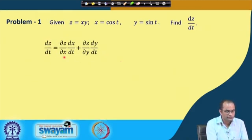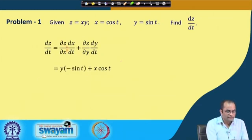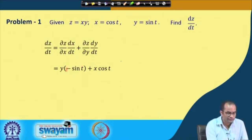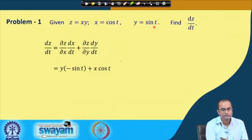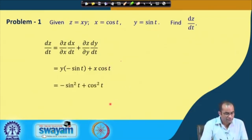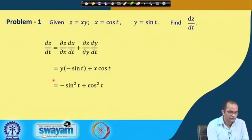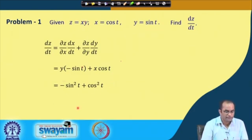Applying the formula: ∂z/∂x = y (since z = xy), and dx/dt = −sin t (derivative of cos t). So the first term is y·(−sin t) = sin t·(−sin t) = −sin²t. Similarly, ∂z/∂y = x = cos t, and dy/dt = cos t (derivative of sin t). So the second term is cos t · cos t = cos²t. Therefore dz/dt = cos²t − sin²t = cos 2t.